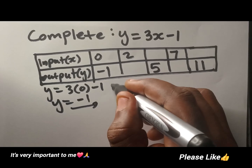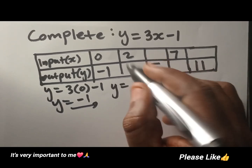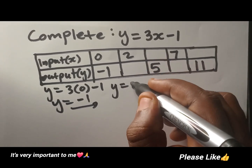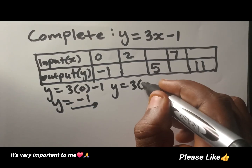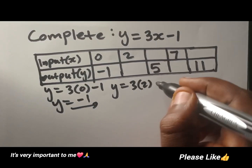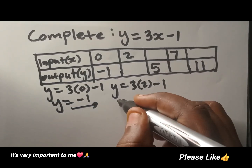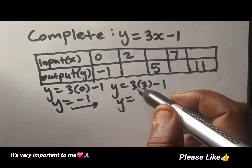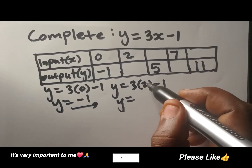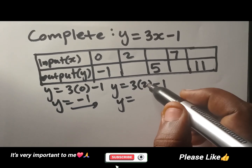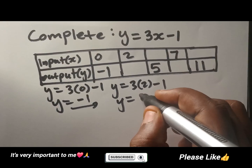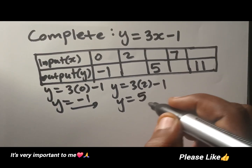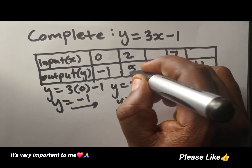And then you are taking the second one. You say 3 into 2 minus 1. The next step is 3 times 2 is going to be 6, minus 1, and then that one is going to give you 5. And then we have 5 here.